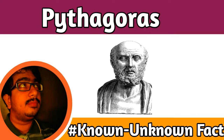Hello friends, welcome to another episode of Known Unknown Facts. Today we are going to talk about Pythagoras. In the study of elementary geometry, we are all familiarized with the concept of the Pythagorean theorem. This tells us that for any right angle triangle, the square of the longest side — the hypotenuse — is equal to the sum of the squares of the length of the other two sides. But do we know who invented this famous formula?